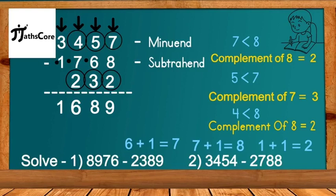Using the Vedic math Shud method, you can solve any two, three, four, or five digit subtraction example easily. Practice examples for four digit numbers: 8976 minus 2389, and 3454 minus 2788. Solve these using the subtraction by Shud method and mention your answers in the comments. Thank you.